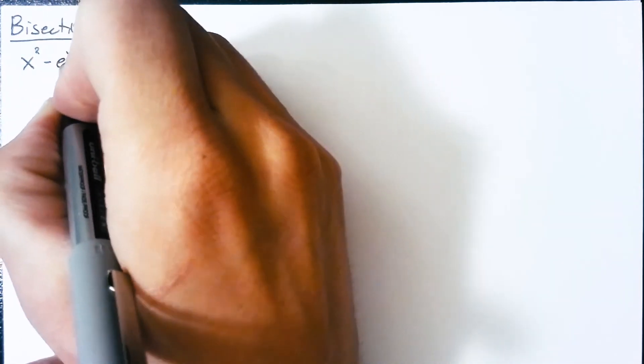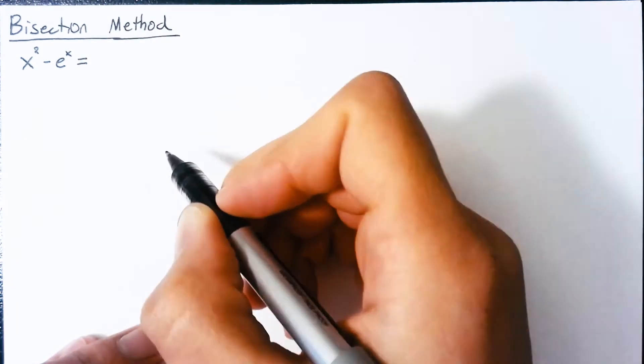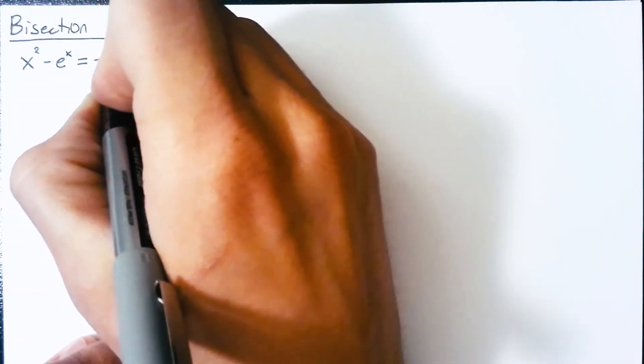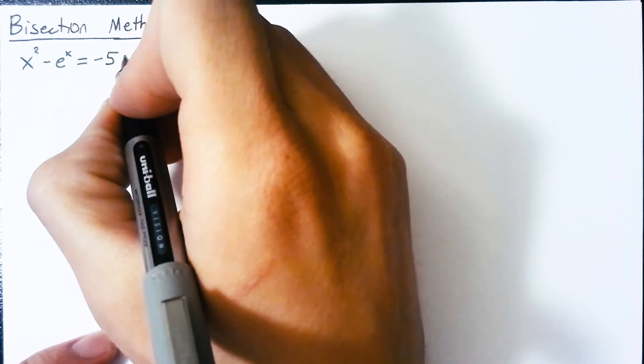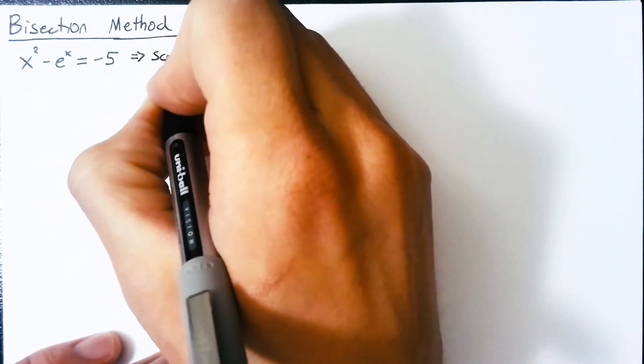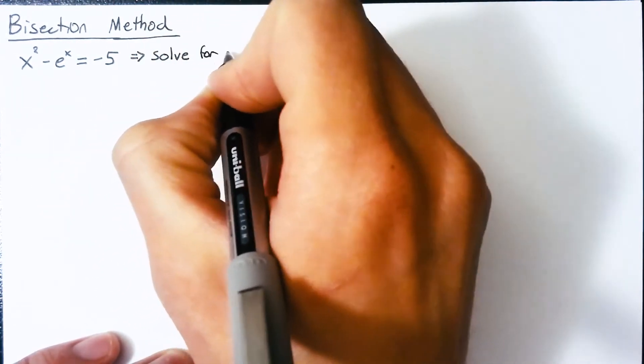What we're trying to solve is simply finding an x value for an equation that solves that equation. So in this case, we're going to have x squared minus e to the x is equal to negative 5, and we're going to try and solve that equation for x.